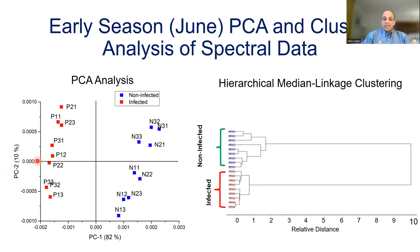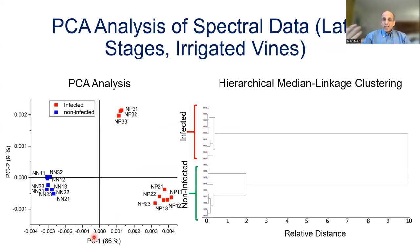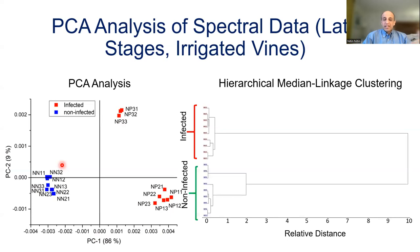As time progresses into June, the difference between infected and non-infected on the PCA plot increases significantly, as does the discrimination power of the hierarchical clustering. PC1 is able to predict over 82 percent of the features in the PCA analysis. In the late season of the irrigated vines, we can also discriminate non-infected from infected, and using hierarchical clustering, it becomes relatively easier to discriminate between them. The clustering of non-infected is limited to certain sections, while the infected cluster more closely together and significantly far away from the non-infected vines.